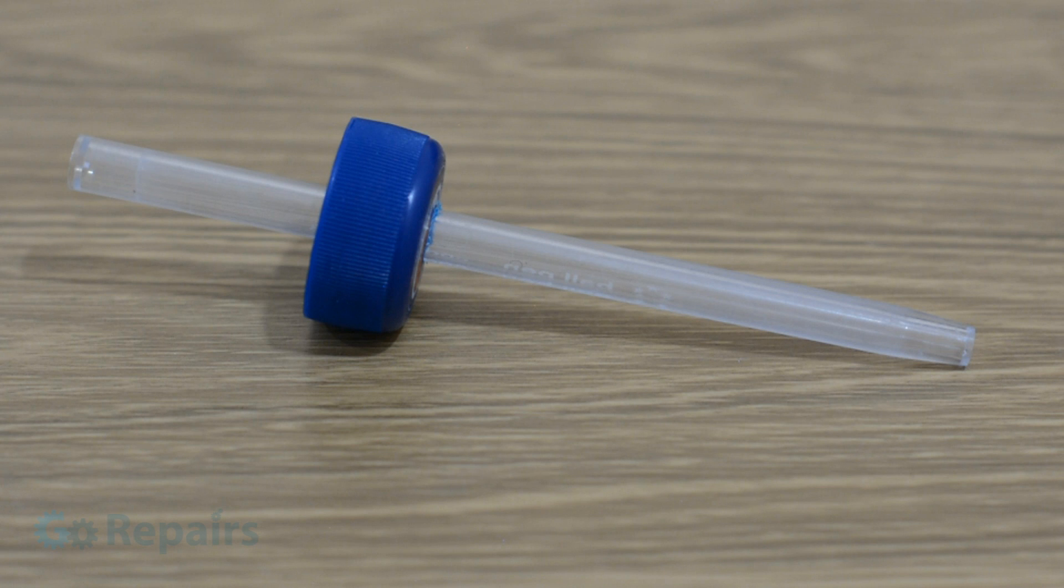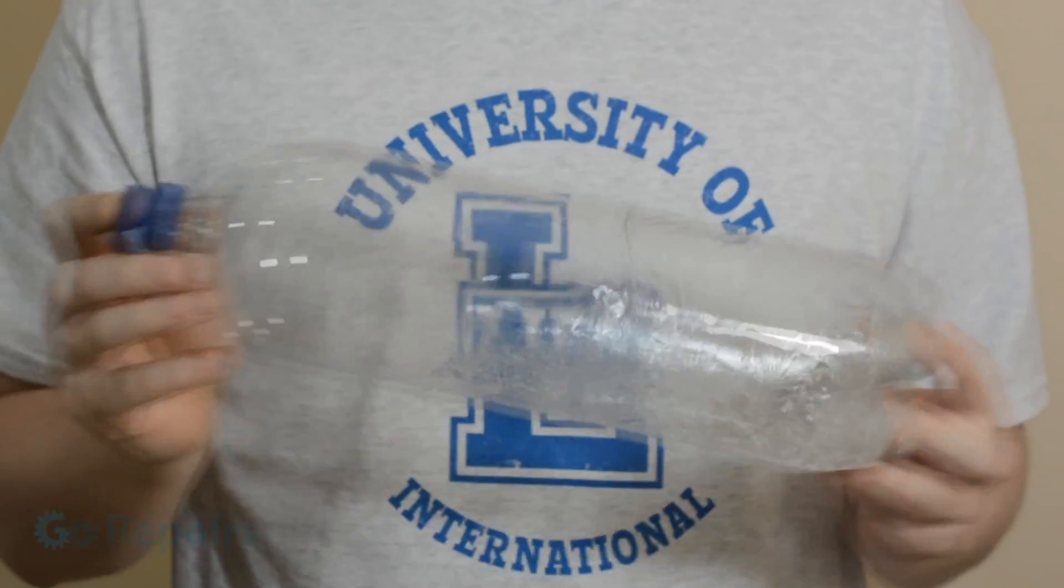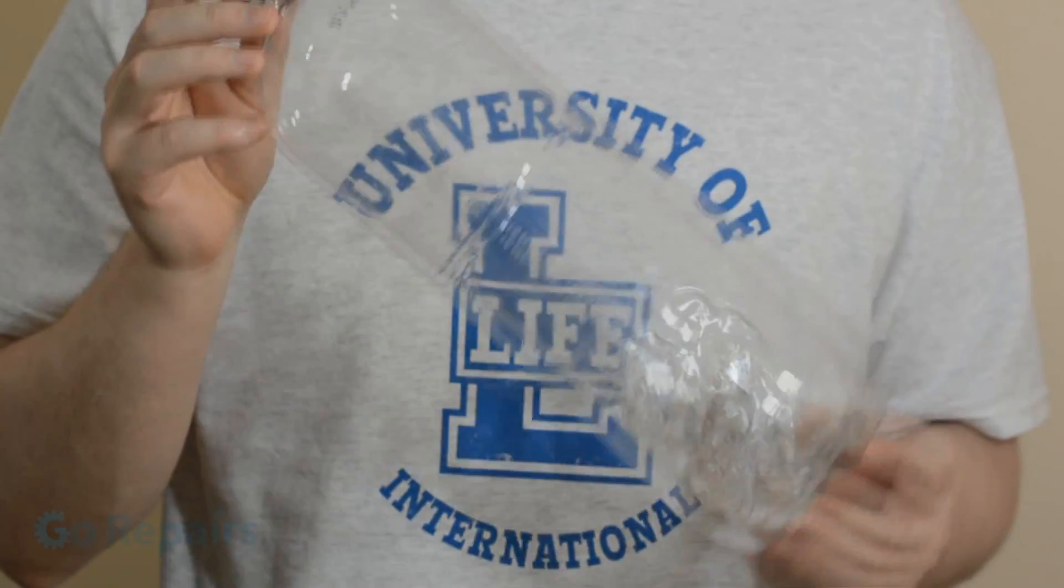The hole in the lid should be just wide enough to allow the pen through but snug enough so it jams on the pen's thicker end. Now I'll pour a small amount of isopropyl alcohol into the bottle and give it a quick shake to agitate it before attaching our pump.